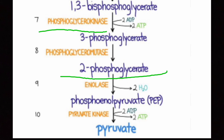Step 9: 2-phosphoglycerate is converted to phosphoenolpyruvate by the enzyme enolase. The loss of H₂O from 2-phosphoglycerate causes a redistribution of energy within the molecule. Step 10, the final step of glycolysis: phosphoenolpyruvate is converted to pyruvate by the enzyme pyruvate kinase. The phosphate group from phosphoenolpyruvate is transferred to ADP to generate ATP, so energy is released in the form of ATP. These reactions constitute the payoff phase of glycolysis, producing energy in the form of ATP and NADH.